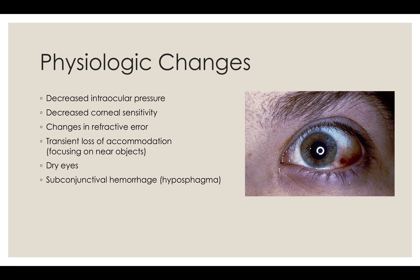Pregnancy disrupts the production of tears by lacrimal acinar cells, resulting in drier eyes more susceptible to irritation. Lastly, subconjunctival hemorrhage, also known as hyposphagma, occurs at increased frequency. A photo of this harmless condition is shown at right.